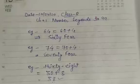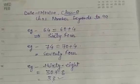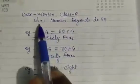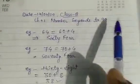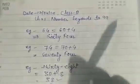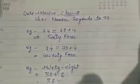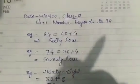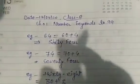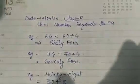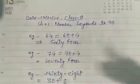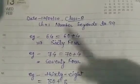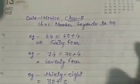Here I am writing chapter 1: Numbers up to 99. As we know, numbers up to 99 means we will read 2-digit numbers. So the first topic is: when we read a 2-digit number, how can we write the number in words?